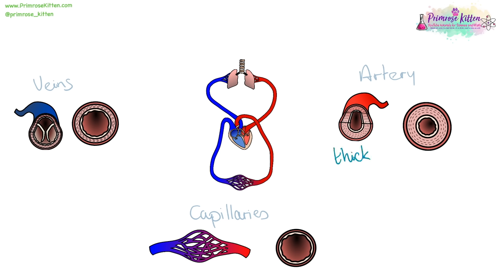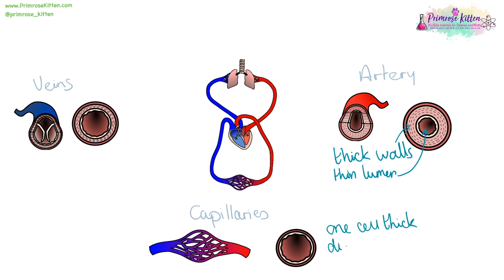Arteries have very thick walls because they are carrying blood under high pressure, which means they have a thin lumen - that's the gap in the middle. Capillaries are very, very small and only one cell thick, to allow for diffusion. They generally go around in a mesh network around things like the gut, the villi in the gut, and the alveoli in the lungs, so they have a large surface area. Veins carry deoxygenated blood back to the heart, so they have valves, thin walls, and a thick lumen, because they are carrying blood under low pressure.